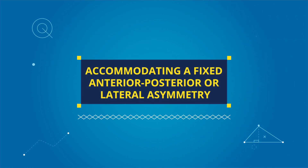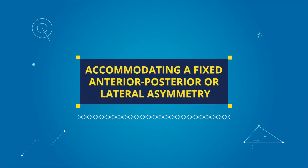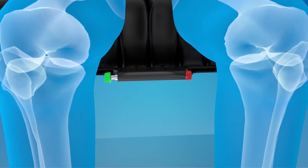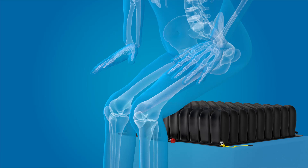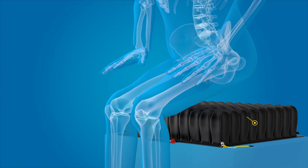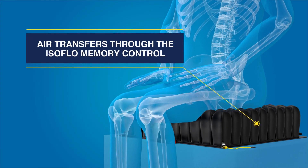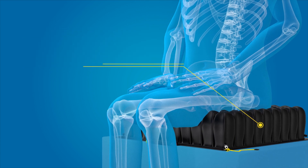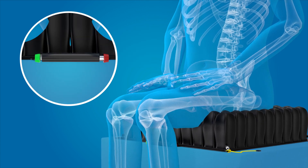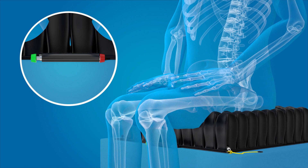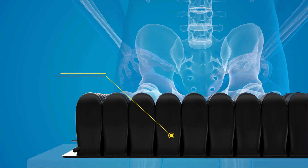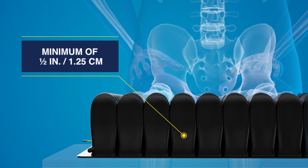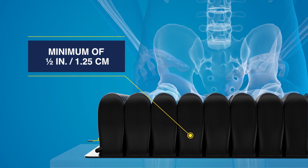To accommodate a fixed anterior-posterior or lateral asymmetry, make sure the isoflow control is open by pressing the green knob in. Have the client sit in their normal position while the air transfers through the isoflow memory control. When the air transfer is complete, close the isoflow control by pressing the red knob in. Perform a hand check to ensure there is a minimum of one-half inch of air between the client's ischial tuberosities and the seat surface.